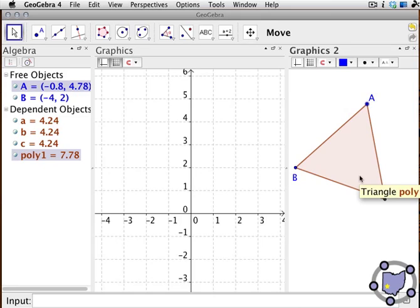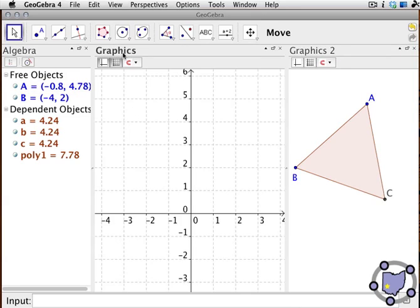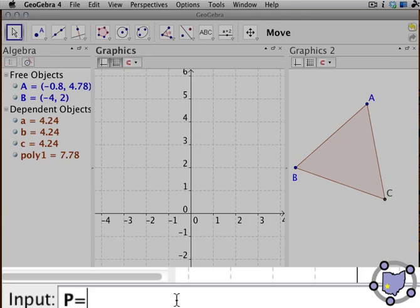So if we go ahead and click on the graphics 1 window, we know that it's the active window when graphics is bold here. And in the input line, we're going to define a new point called P. Remember, we capitalize names of points. And P is going to be the ordered pair, C, poly 1.